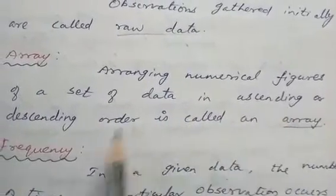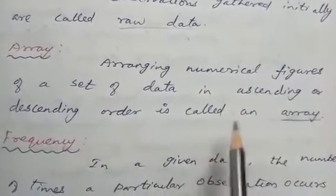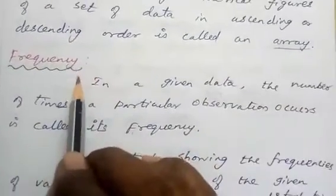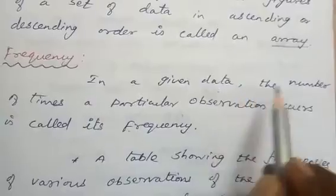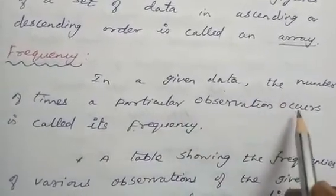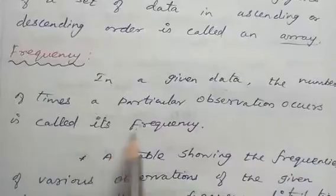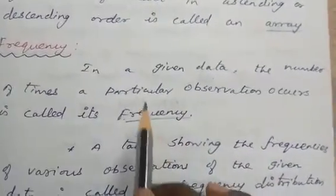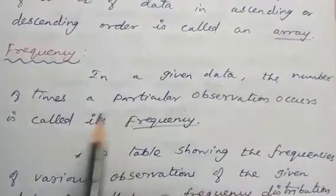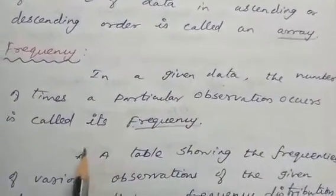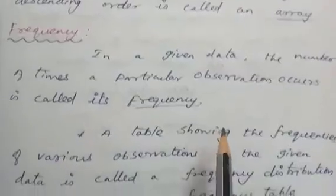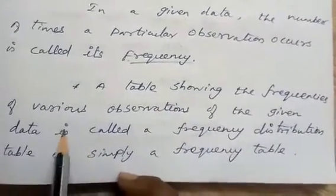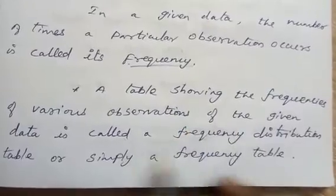The next one is frequency — in a given data, the number of times a particular observation occurs is called its frequency.